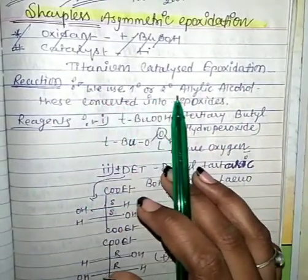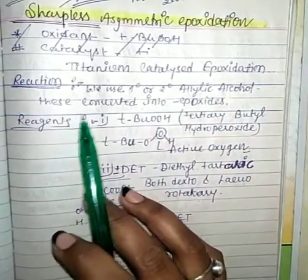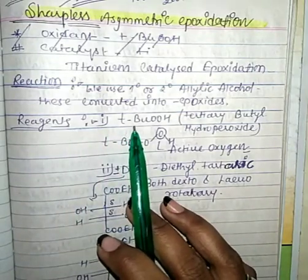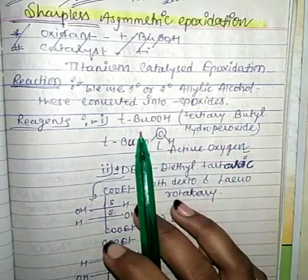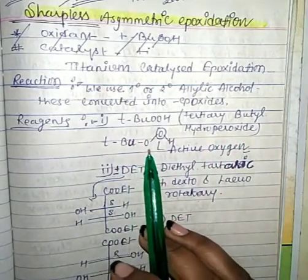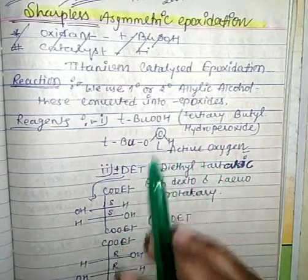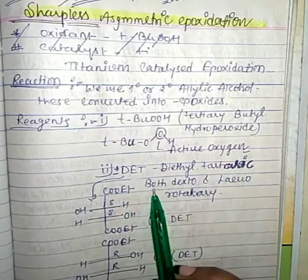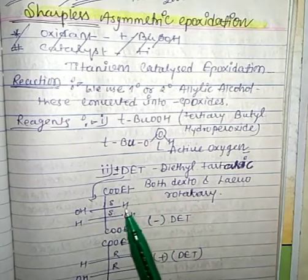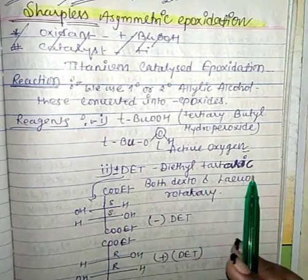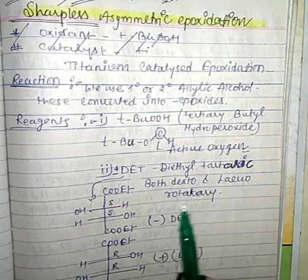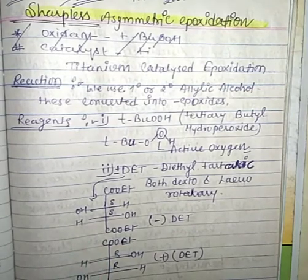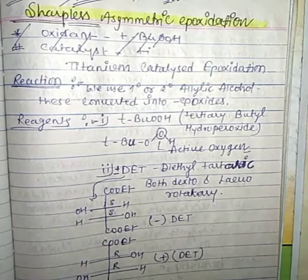In Sharpless asymmetric epoxidation, we use primary or secondary allylic alcohols. These are converted via epoxidation. We use tertiary butyl hydroperoxide (TBHP) as an active oxygen source. The next reagent is DET — diethyl tartrate. We use DET in both dextrorotatory and levorotatory forms.